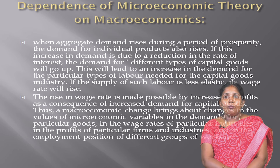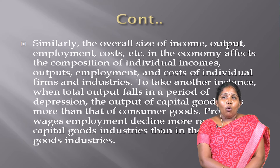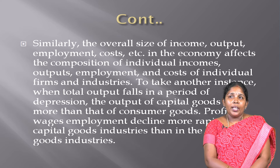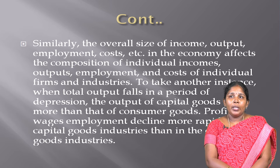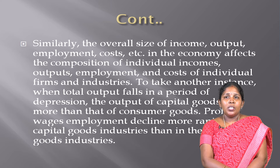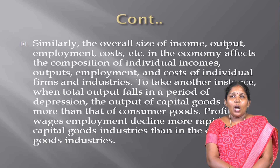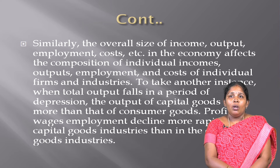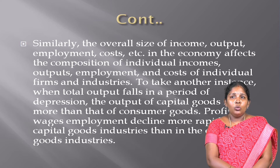Similarly, the overall size of income, output, employment, and cost in the economy affects the composition of individual incomes, output, employment, and cost of individual firms and industries. When total output falls in a period of depression, the total output of capital goods falls more than that of consumer goods. Profits, wages, and employment decline more rapidly in capital goods industries than in consumer goods industries.